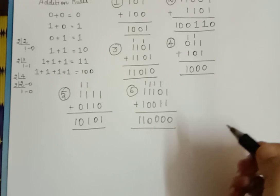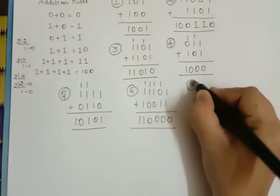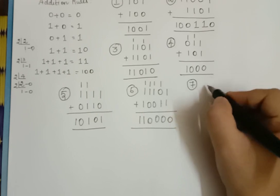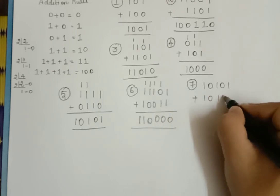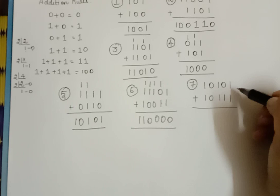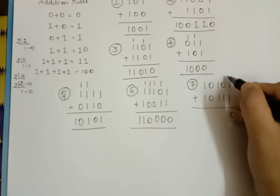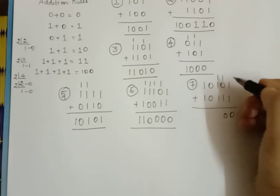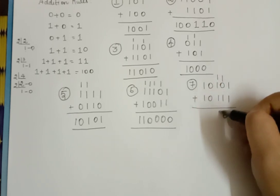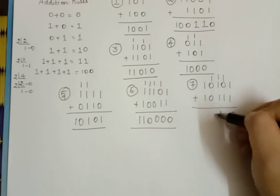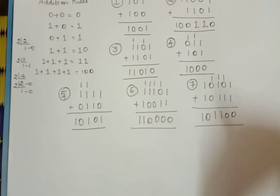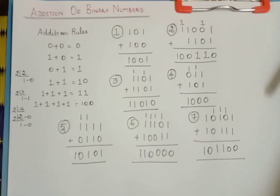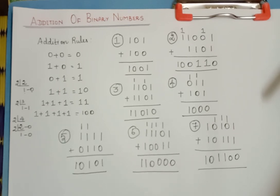Let us take one more number: 10101 plus 10111. The addition: 1 and 1 is 0 with a carry over of 1. Then 0 with a carry over of 1, and 1 plus 1 plus 1 is 1 with a carry over of 1. And 1 plus 1 plus 1 gives 10. So this is the binary addition. Hope you have understood the concept of binary addition. In our next video, let us see the binary subtraction. Thank you.